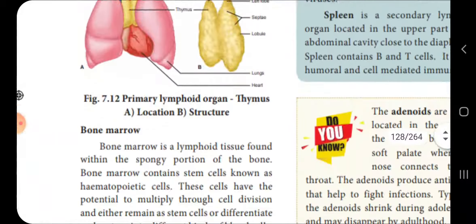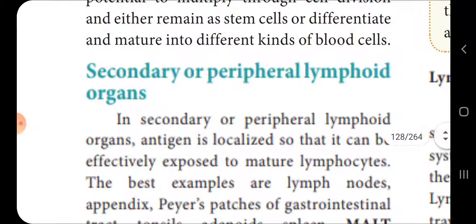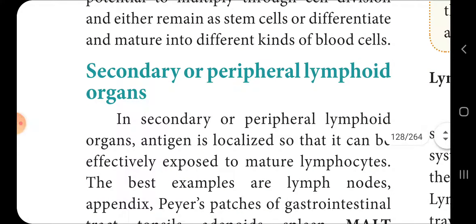Secondary lymphoid organs are peripheral lymphoid organs. Antigen is localized in these organs so that it can be effectively exposed to mature lymphocytes. The best examples are the lymph nodes and the appendix.